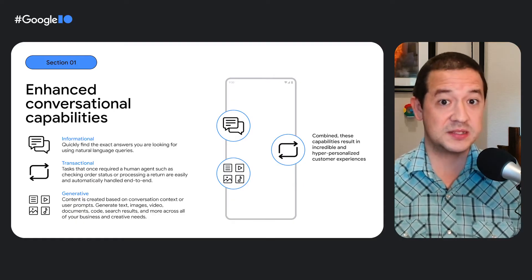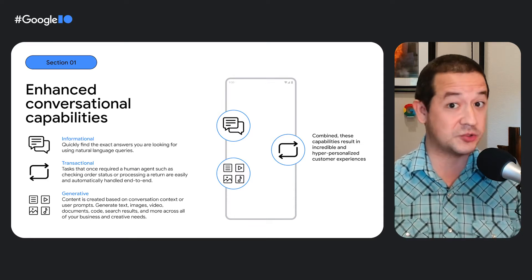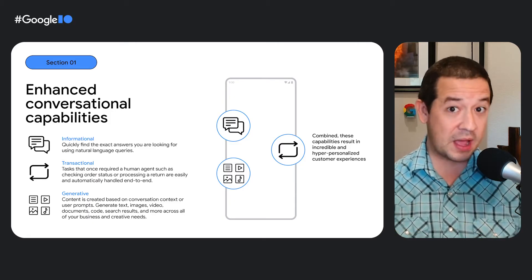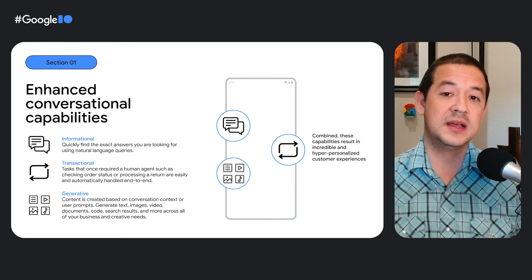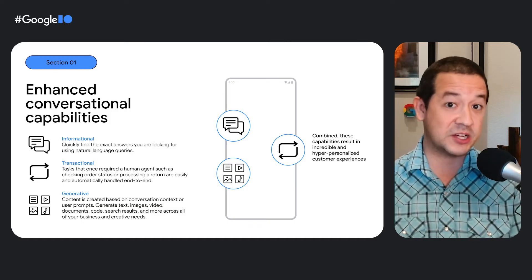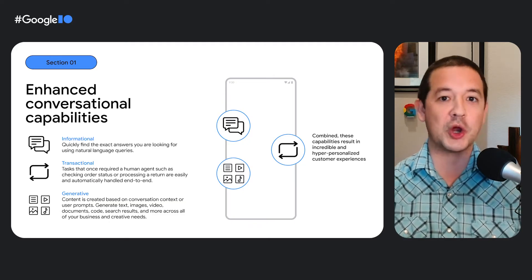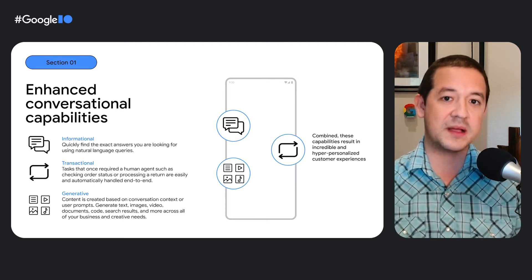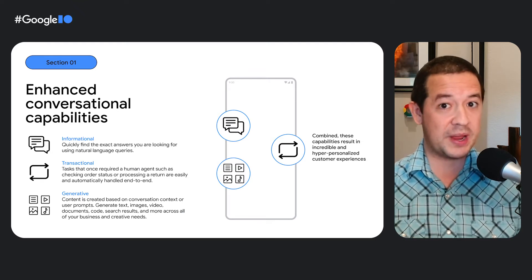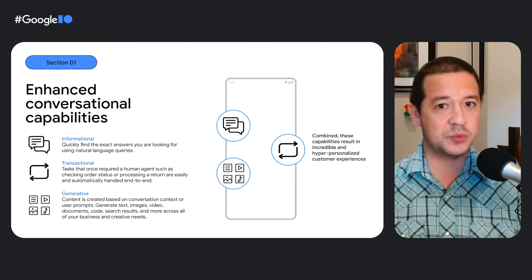For the rest of this session, we'll focus on three types of conversational capabilities that you can combine to create amazing customer experiences. First, informational capabilities, which means customers can ask more open-ended questions with natural language to quickly get the information they need without chatbot developers having to manually define thousands of questions and answers. Second, transactional capabilities — chatbots can now handle a wider range of tasks and actions automatically, rather than needing to escalate to a human agent early in the conversation. And third, generative capabilities, which means combining the first two to make the customer experience hyper-personalized — for example, generating or rewriting content in real time based on how the question was phrased or even based on a specific customer profile.